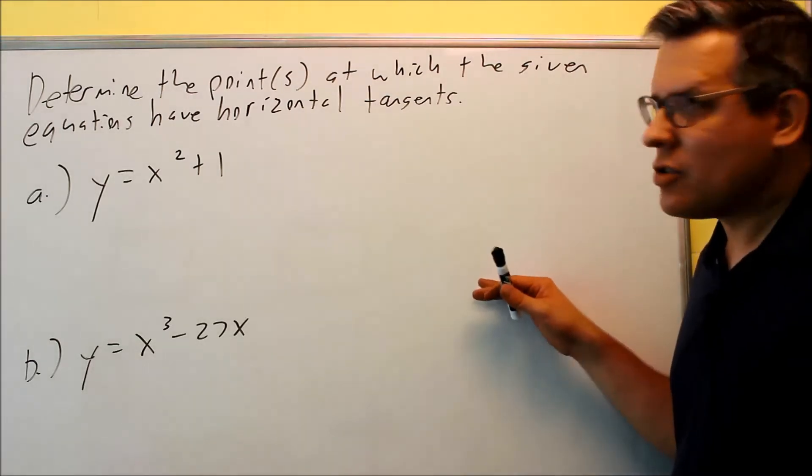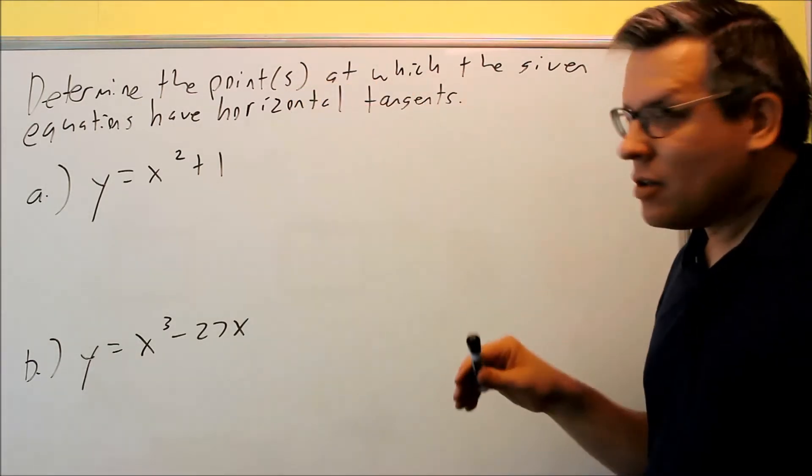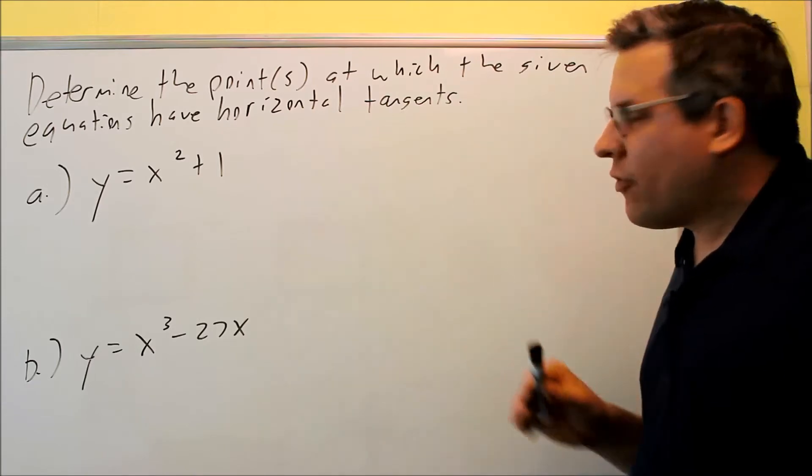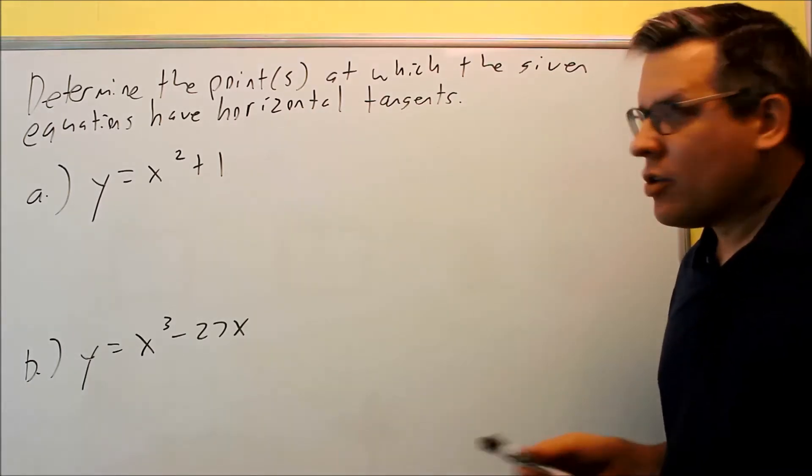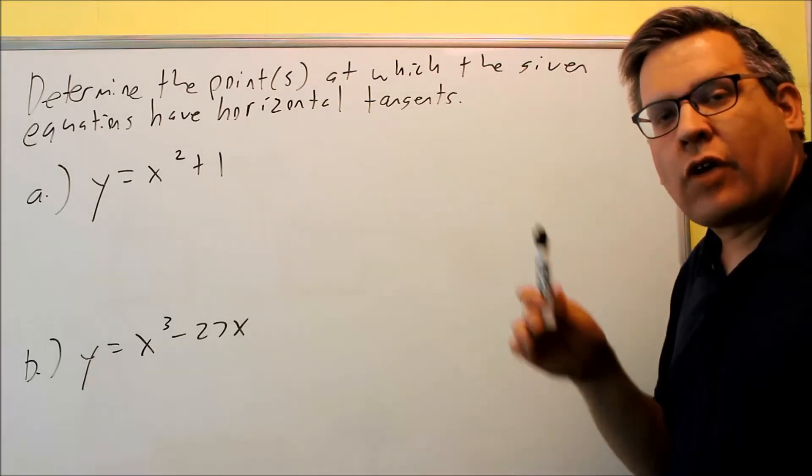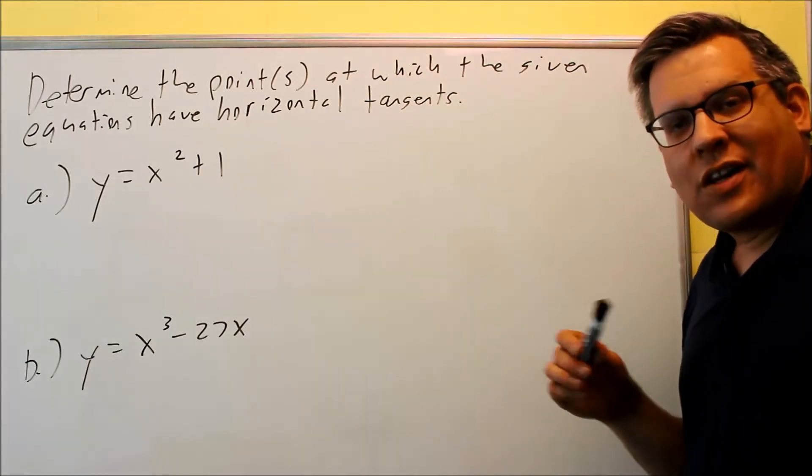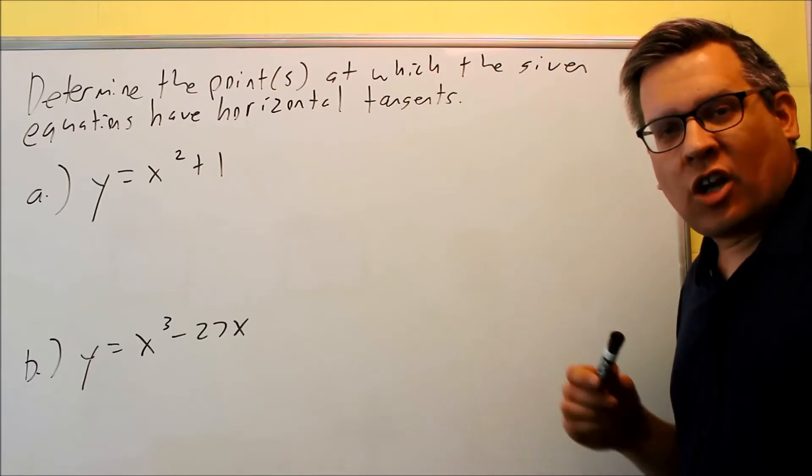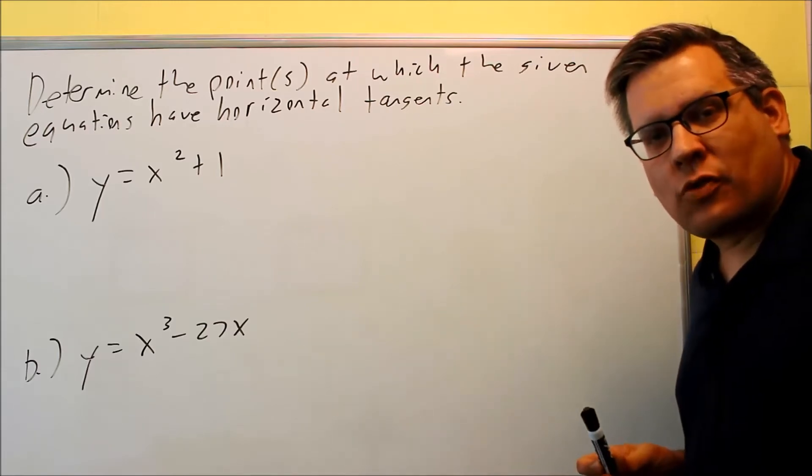For these problems, we want to find the point or points at which these each have horizontal tangents. So a horizontal tangent means that the tangent line touches the graph at one place, but at that point, that tangent line is horizontal, which means that it's going to have a slope of zero.